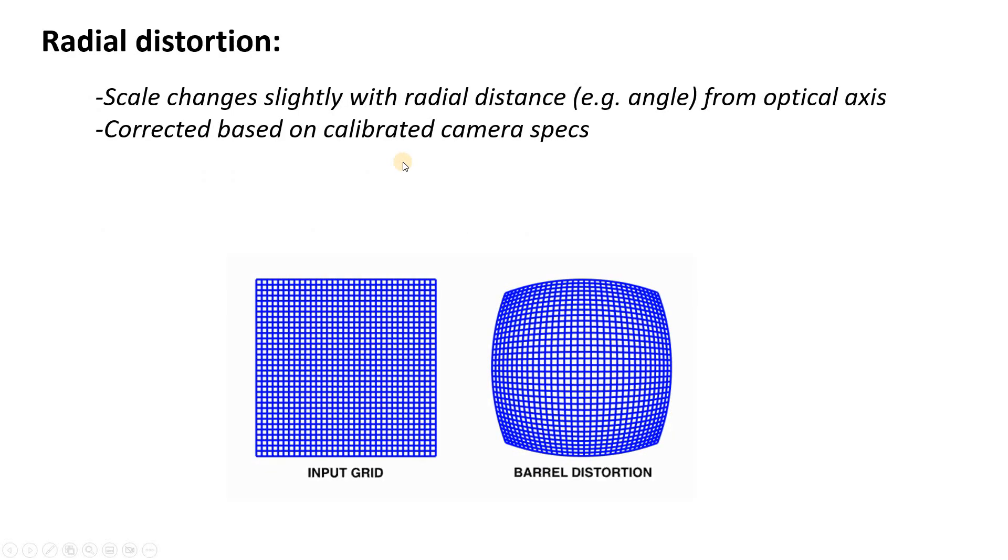So radial distortion essentially is a property of the lens. And what this means is that the scale of the image is changing slightly with the radial distance, the distance from the optical axis. So if you imagine an image where your optical axis is vertically intersecting the center of the image and the further you go from that optical axis in any direction, the more distortion you get in your image.